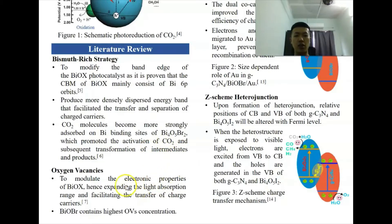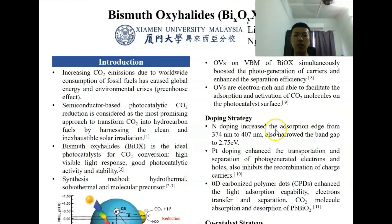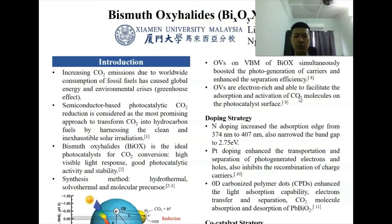Besides, halogen vacancies can be created to moderate the electronic properties of BiOX to expand the light absorption range. Among all halogens, BiOBr contains the highest halogen vacancies. Furthermore, oxygen vacancies at the valence band minimum accelerate the photogeneration of carriers and enhance their separation efficiency. Oxygen vacancies are electron-rich and able to facilitate the adsorption and activation of CO2 on the catalyst surface.